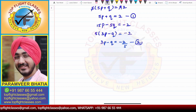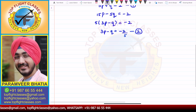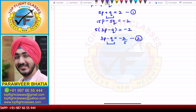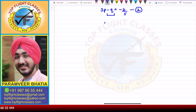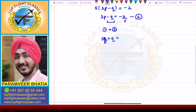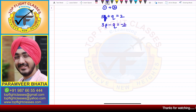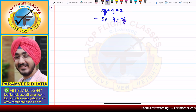Now looking at the first and second equations, the first has +Q and the second has -Q, so on addition Q will be eliminated. We have 5P + Q = 2 and 3P - Q = -2/5, so we just add them.